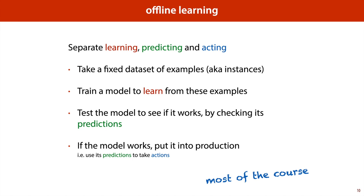What we've gotten rid of is this online element where we are learning and predicting at the same time. We learn once, then we have a model, and then we look at how good that model is. This robs the exercise of some of its more exciting aspects — we don't have the view of an agent exploring a world anymore. But it still allows us to do something very useful: it allows us to learn programs that we have no idea how to write ourselves. And that's really what machine learning is all about.